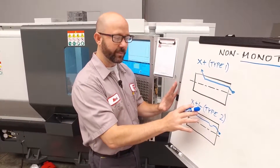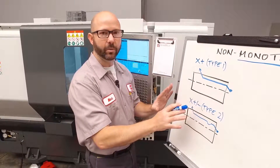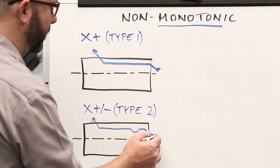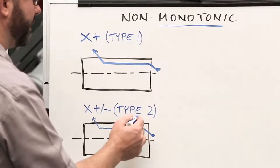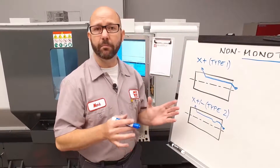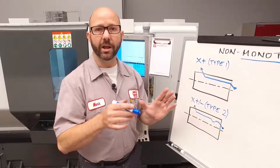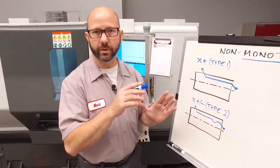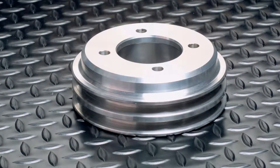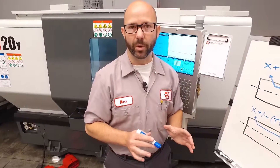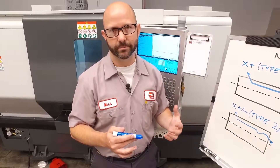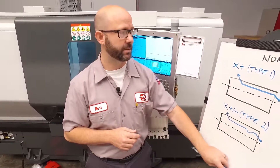A different type of roughing cycle would be non-monotonic — it's going to move up and then down and then up again. You might see this on a part that has lots of grooves or valleys, like a pulley. So we've gotten a non-monotonic alarm.